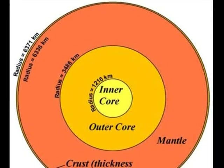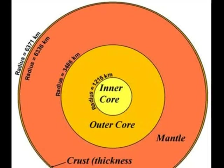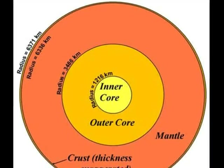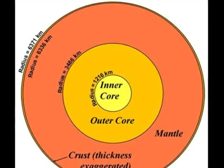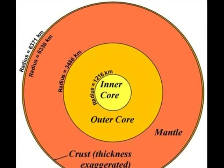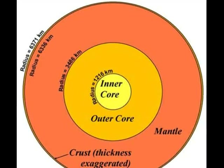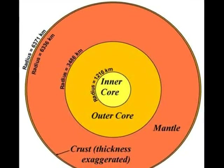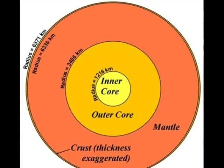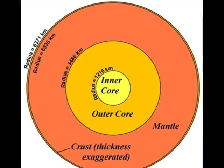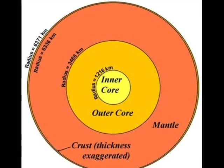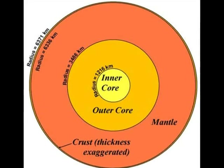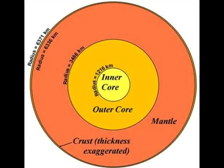The mantle is the thickest middle layer. The lithosphere is part of the mantle and is made out of solid and liquid, so it slowly moves. The center layer of the Earth is the core. There are outer core and inner core. The outer core is liquid, but the inner core is solid.